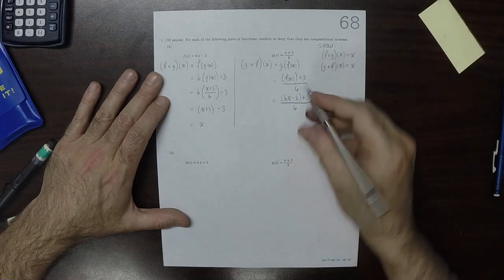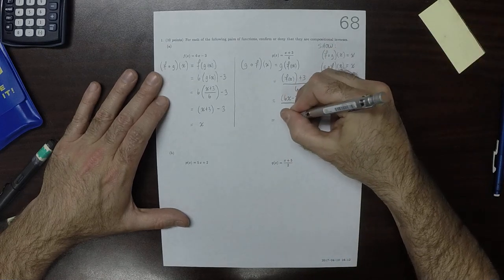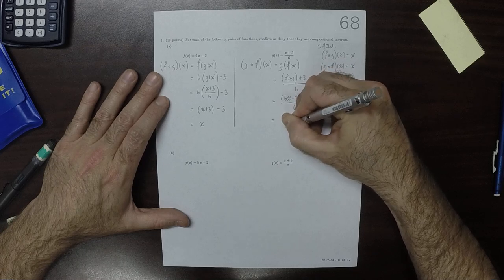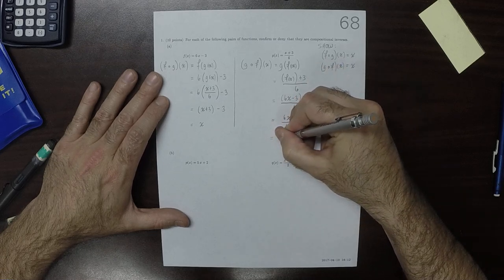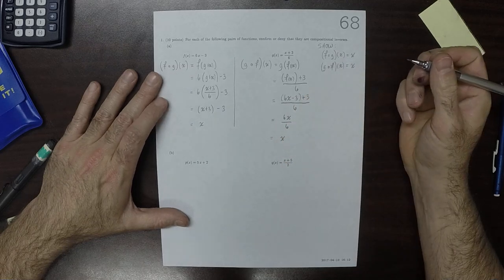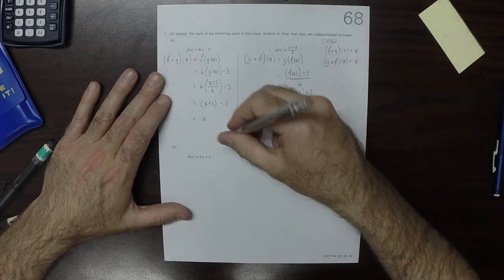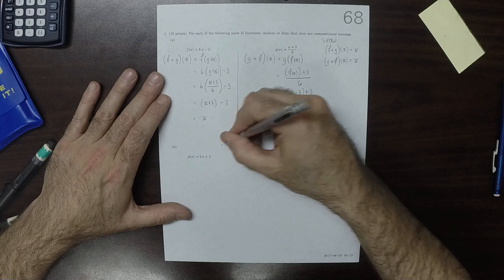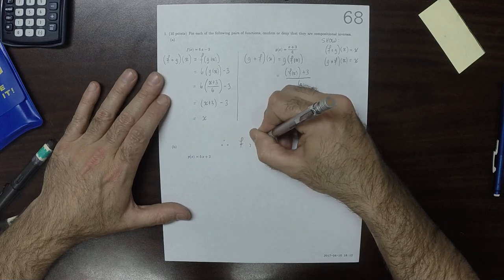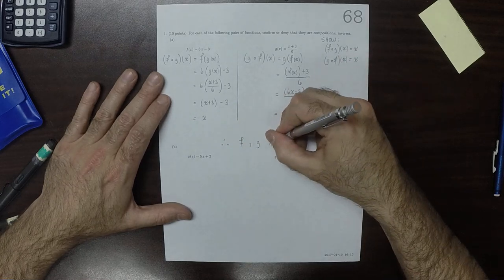So now the 3s cancel, the 6s cancel, and we get x. So, therefore, f and g are compositional inverses.